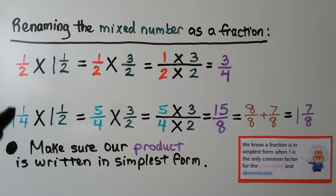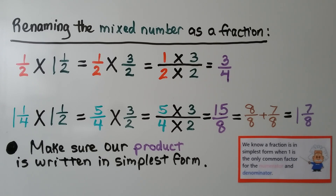We can rename both when both are mixed numbers. We multiply the numerators straight across — 5 times 3 equals 15 — and the denominators straight across — 4 times 2 equals 8 — giving us 15 eighths. 15 eighths equals 8 eighths (1 whole) plus 7 eighths, so it's 1 and 7 eighths. We need to make sure our product is written in simplest form; a fraction is in simplest form when 1 is the only common factor for the numerator and denominator.